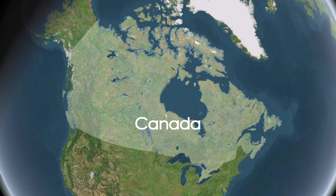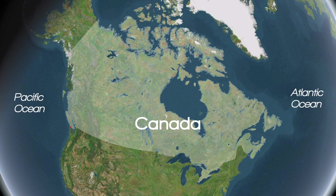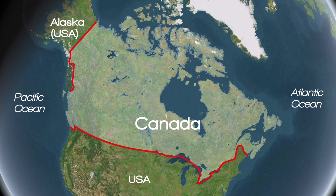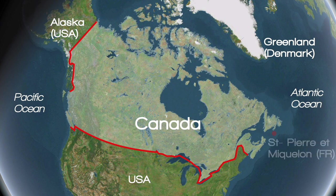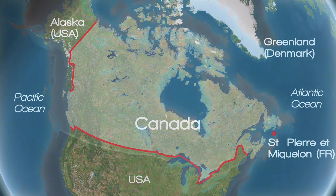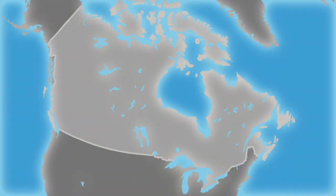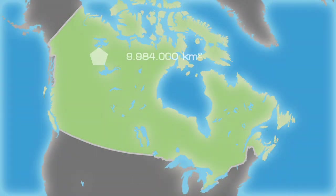Canada extends in North America from the Atlantic Ocean in the east to the Pacific Ocean in the west. It borders the USA in the south, Alaska, also the USA, in the northwest, and Greenland, which belongs to Denmark, in the north. In addition, the French islands of Saint-Pierre and Miquelon lie off the eastern coast of Canada. The country has an area of about 9,984,000 square kilometers, making it the second largest country on earth, after Russia.